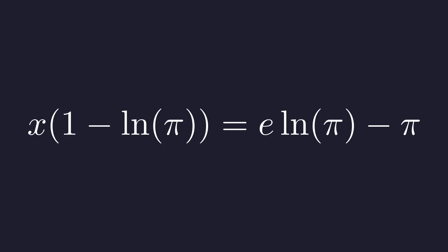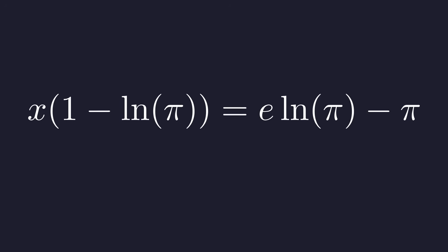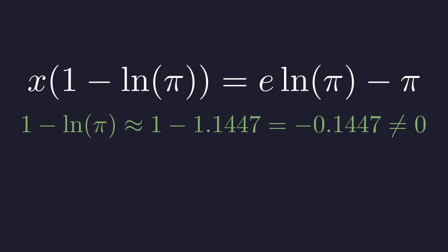Since pi is approximately 3.1416, its natural logarithm is approximately 1.1447, which is greater than 1. Therefore, the coefficient of x is negative, and most importantly, not 0.